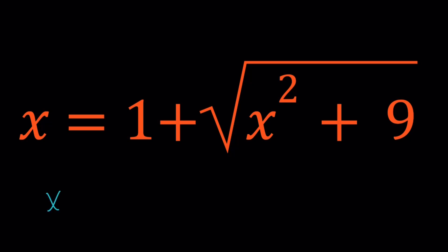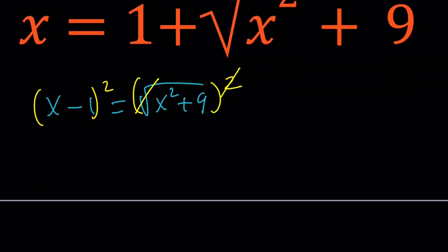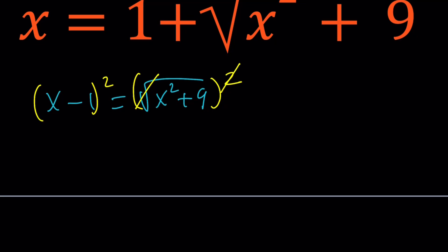First subtract 1 from both sides and then square both sides. And when we square both sides, the square root and the square are kind of like inverse operations. They cancel out.